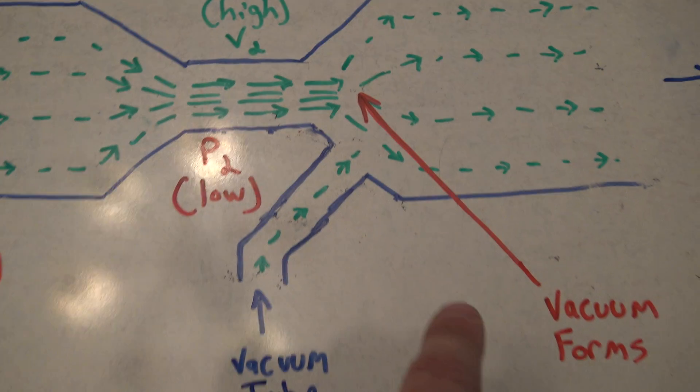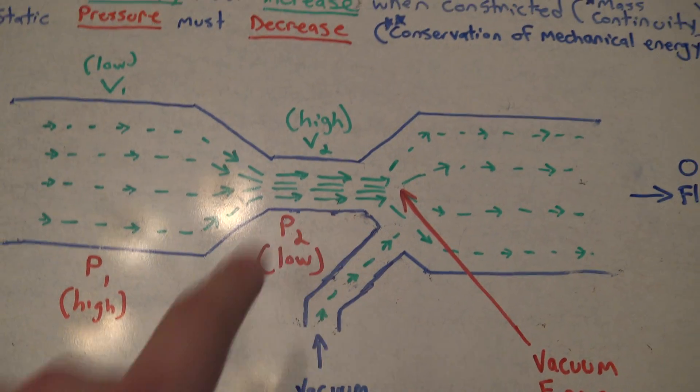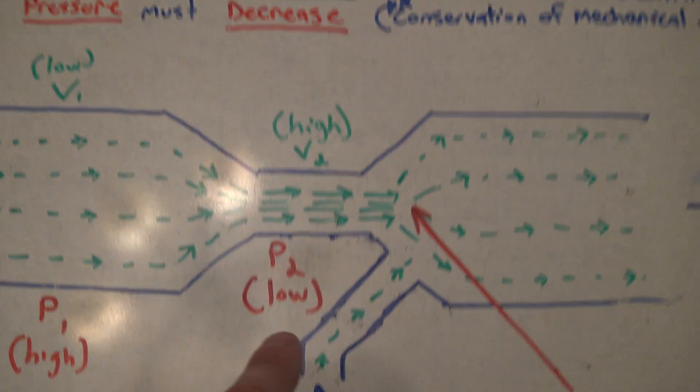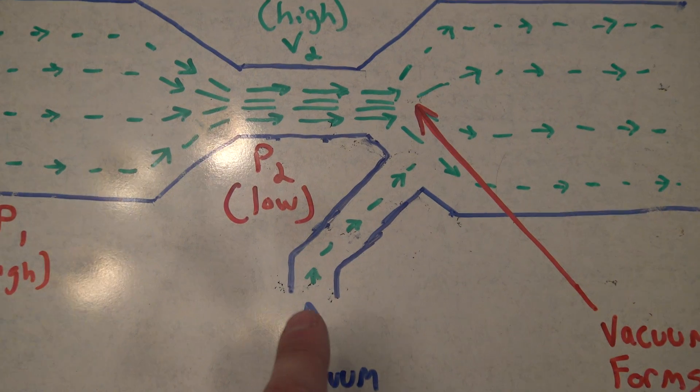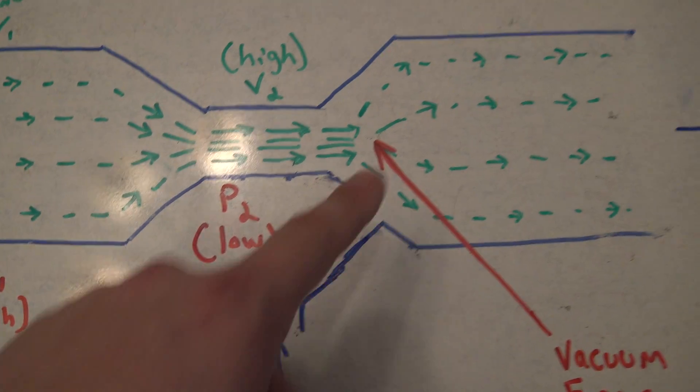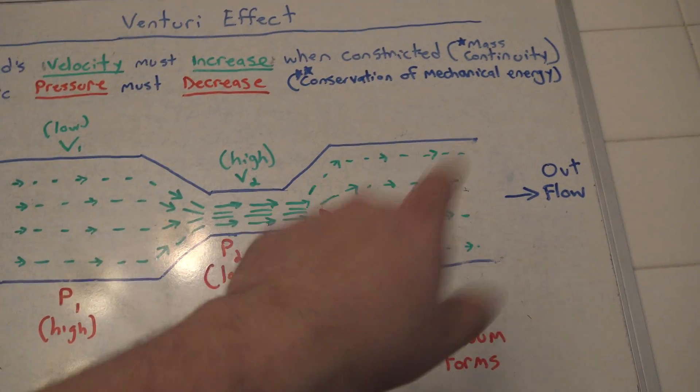And when that forms, because your pressure is going from low pressure to high pressure and your velocity is going from high velocity to low velocity, you have the ability to basically draw water in through another tube and make it enter this side of the system.